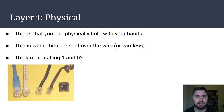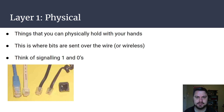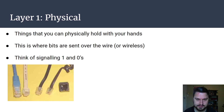Looking at layer one, that is the physical layer. That's things that you can hold in your hands — it will be wires, it will be actual routers, it could be the power supply of the routers. If there's an issue with a router booting up, it might be the power supply, and we think of that as a physical issue. So if you hear someone say it's a physical issue or a layer one issue, they're talking about physical equipment, links, or things that might be down. It's also where we start to see the bits that get sent over the wire or over wireless.